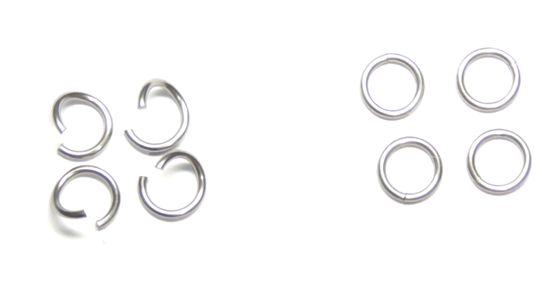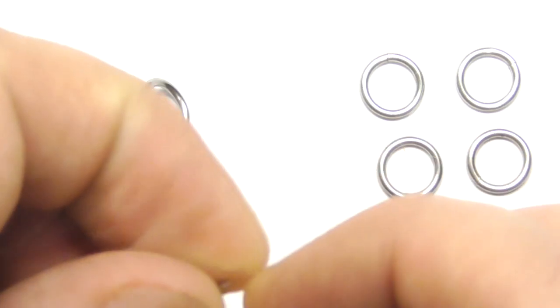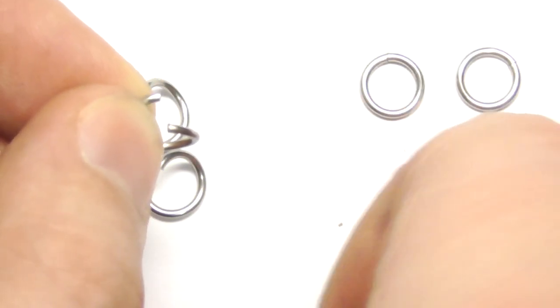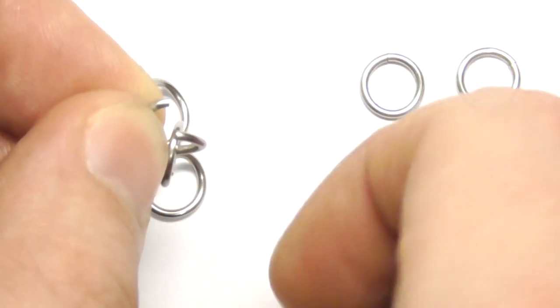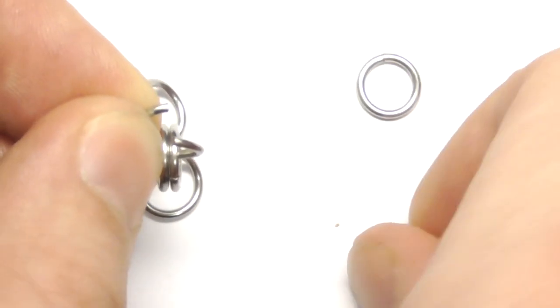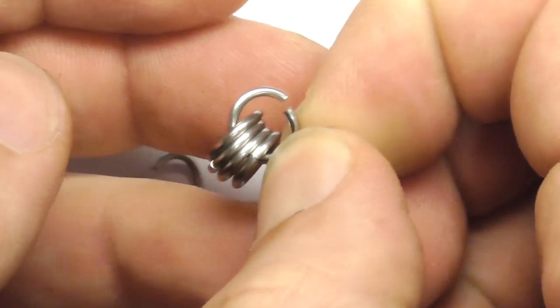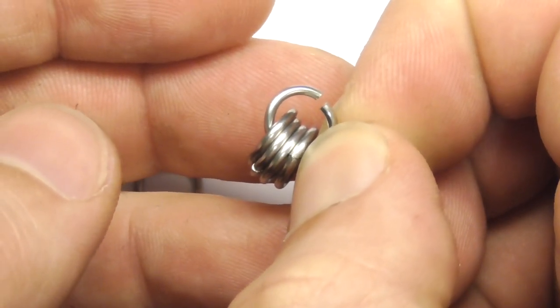Assembly process is very easy. So first of all we take one open ring and put all closed rings on it. Like that. Now let's close this ring.